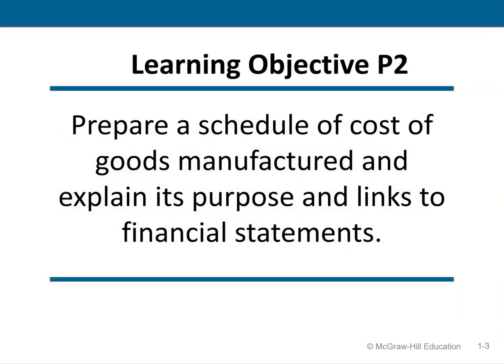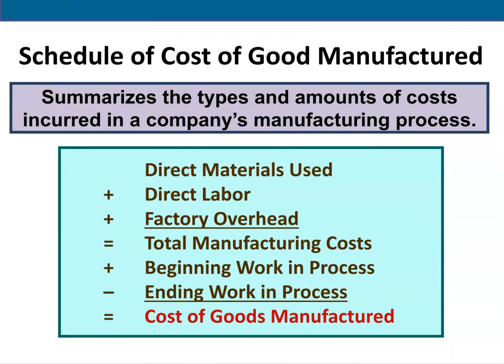Now let's take a look at preparing a schedule of cost of goods manufactured and show how they're linked to the financial statements. We always start with direct materials used, which is a calculation: we start with beginning, add purchases and any costs associated with that material. Then we add direct labor and factory overhead — which is made up of indirect costs — to get total manufacturing costs. Then we add beginning work in process, subtract ending work in process, and that gives us cost of goods manufactured.